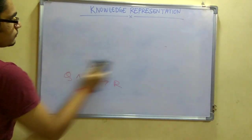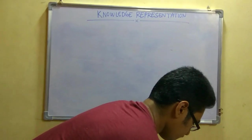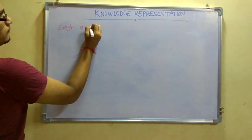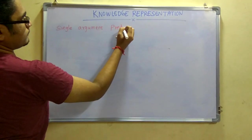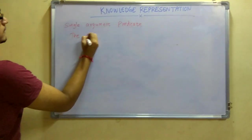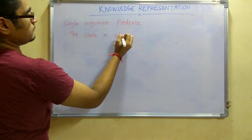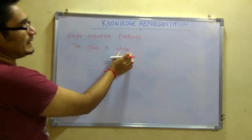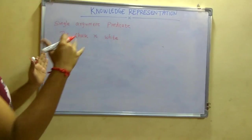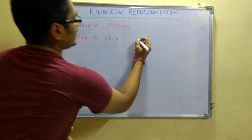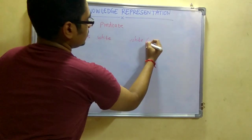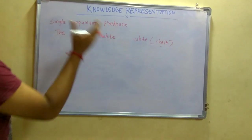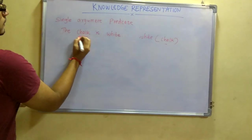In predicate logic there are three main types. The first is a single argument predicate, meaning only one argument is present. For example, consider 'the chalk is white.' Here chalk is a noun and white is an adjective. In predicate logic we write white(chalk), meaning the object chalk is white. Chalk is our single argument.